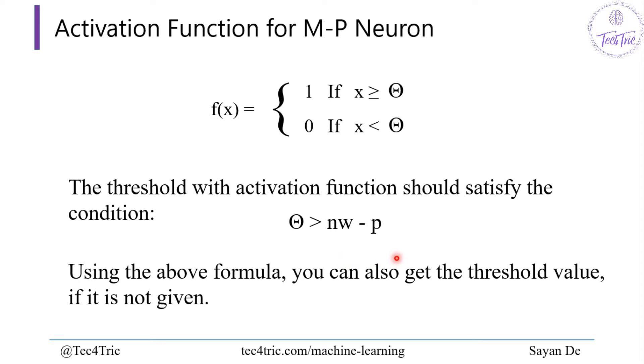Using the above formula we can also get the threshold value if it is not given. If we know the number of inputs, weights, or negative weights, then we can simply calculate the threshold value. We'll see that later in the next videos where we will calculate the AND function for McCulloch-Pitts Neuron.